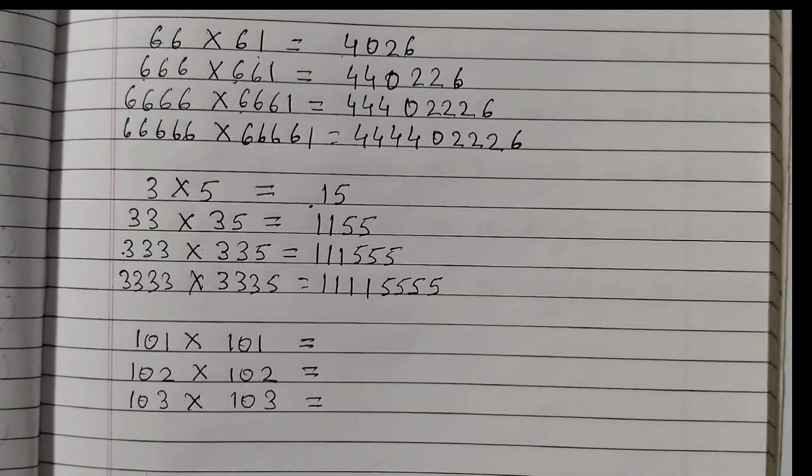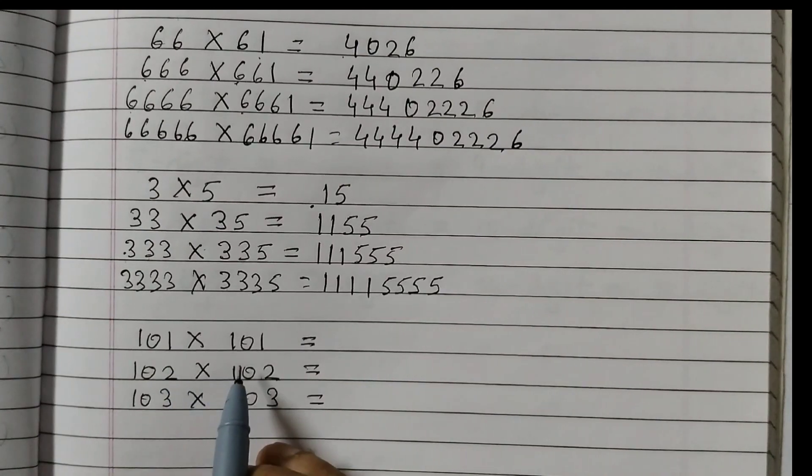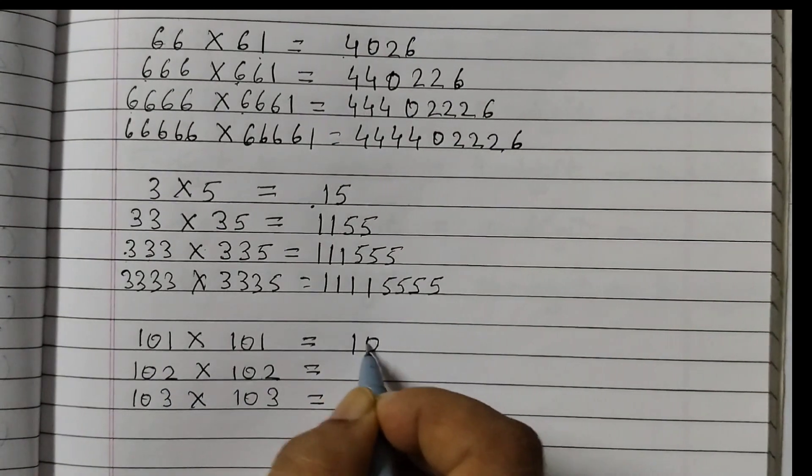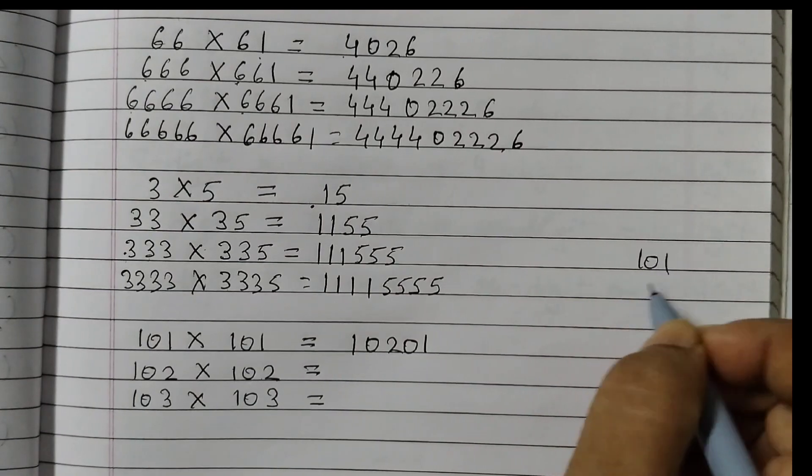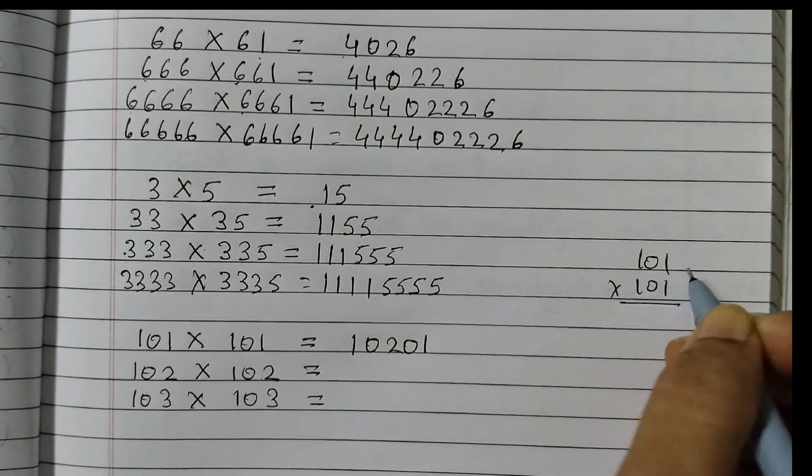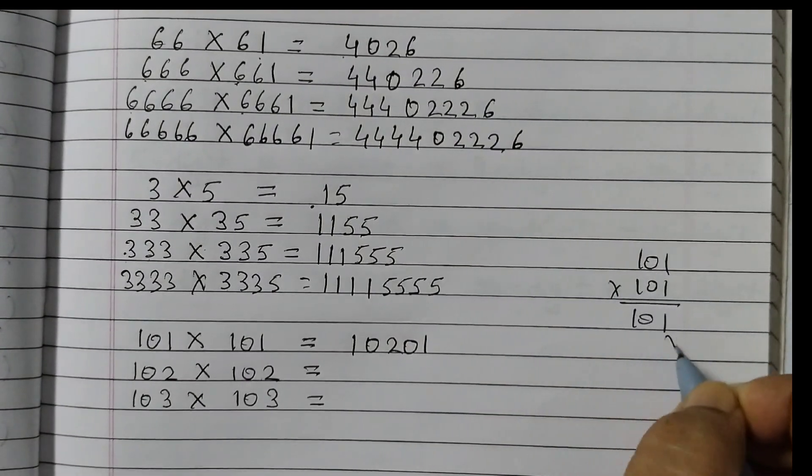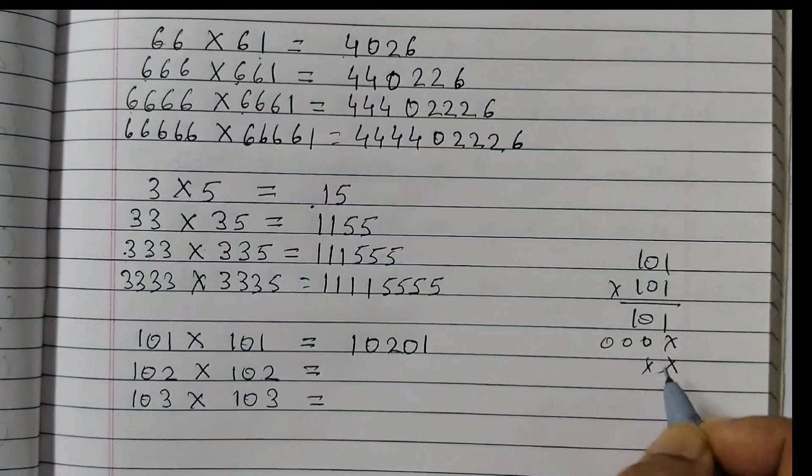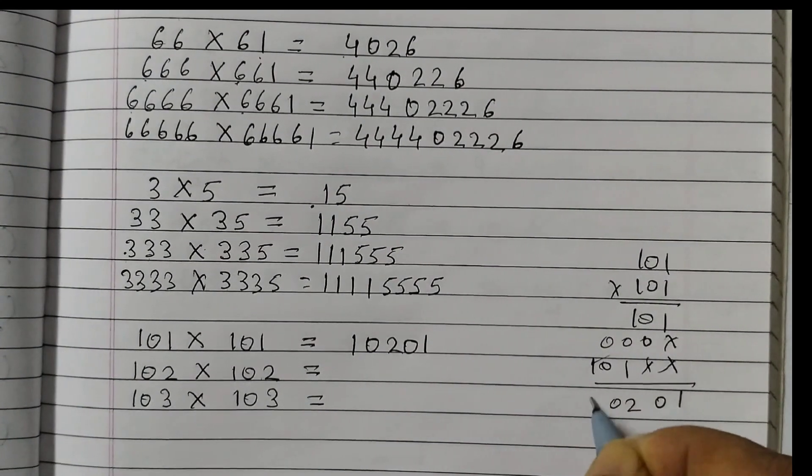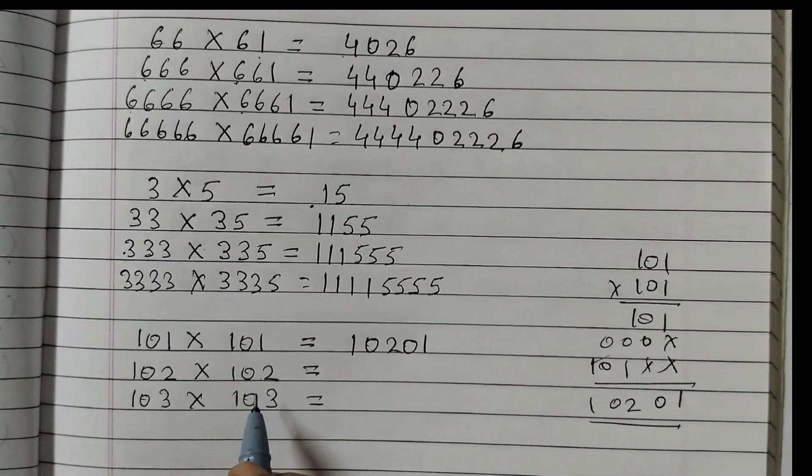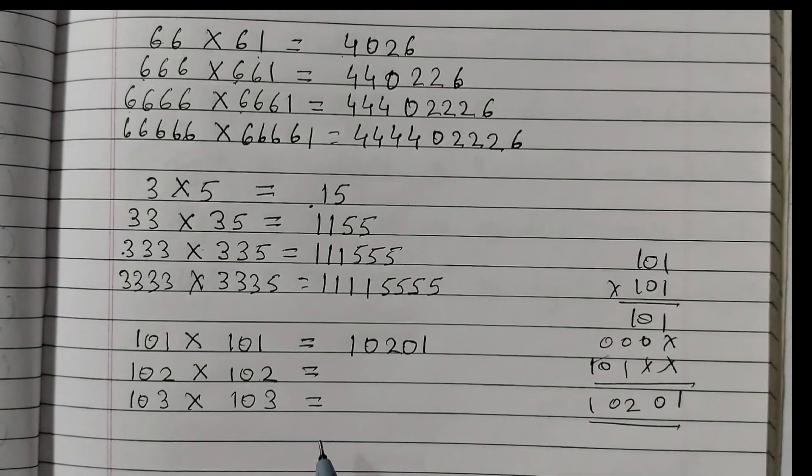And the last multiplication pattern that we have is 101 into 101 gives 10201. You need to multiply and see. Okay? Like this. 101, 101. You have to multiply and see. Like this will be 101. Then this will be all 0's. Then it's 101. So 10201. Okay? So first 2 you have to multiply. And then only you can find out the pattern.